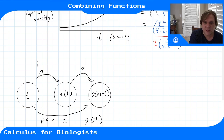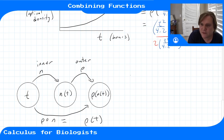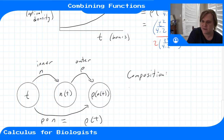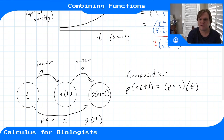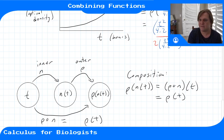We call n the inner function and ρ the outer function. The composition can be written as ρ∘n, meaning ρ of n, and it gives you a function of just time. At the end of the day, the composition of the ρ function and the n function gives us ρ(t).